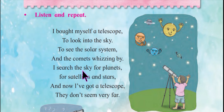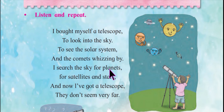I search the sky for planets. Ab usne kya bola — 'I search the sky for planets.' 'Search' means to look for something that is missing. So he is searching in the sky. What is a planet? A planet is a very large round object in space that moves around the sun or another star.